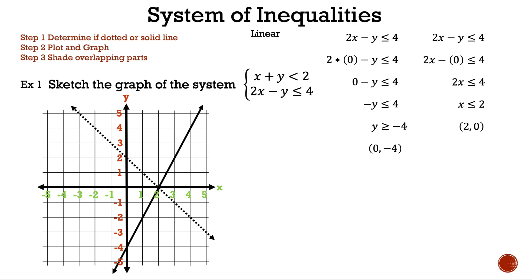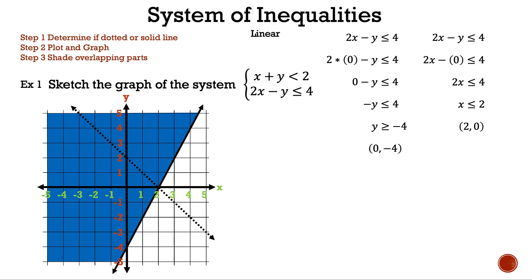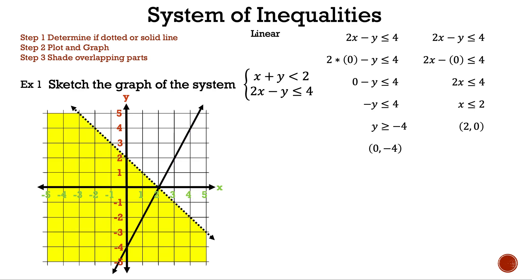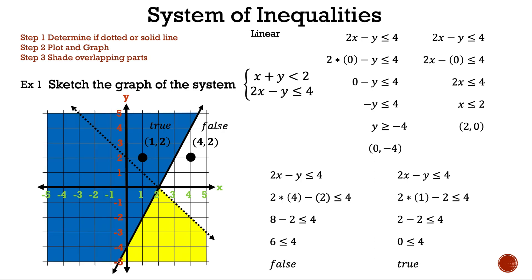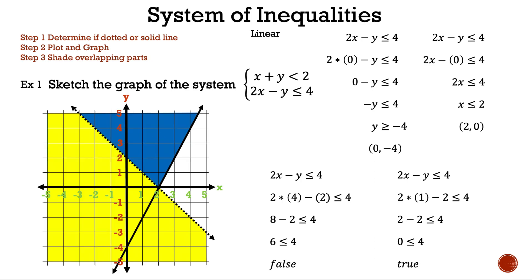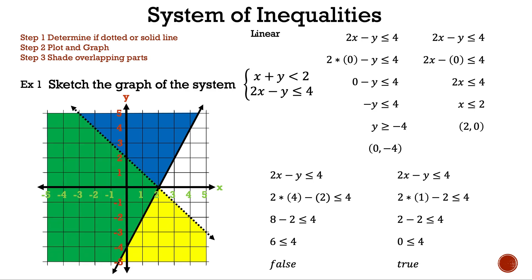Let's get rid of the previous shading so we can focus on just this inequality. Remember, we either shade to the left or to the right. Now, let's bring back the previous results. Let's pick two points — in this case, (1, 2) and (4, 2). Let's substitute (4, 2) into 2x minus y is less than or equal to 4. Our result is false, because 6 is less than or equal to 4 is false. Let's substitute (1, 2) — our result is true, because 0 is less than or equal to 4 is true. Now we know to shade to the left.